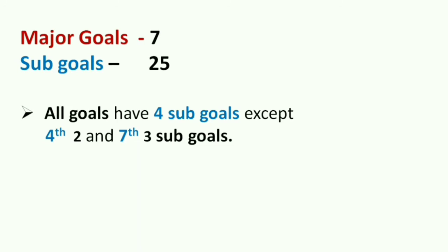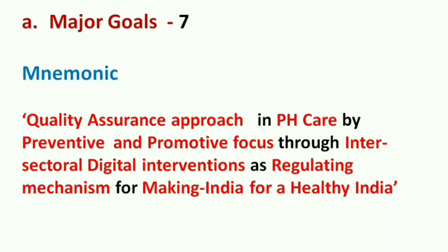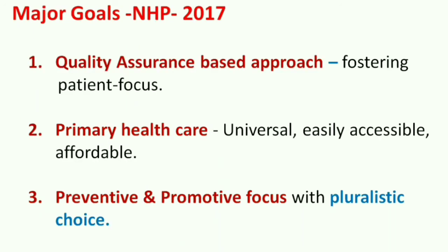Regarding major goals: there are seven goals and 25 sub-goals. All goals have four sub-goals except the fourth goal (which has two sub-goals) and the seventh goal (which has three sub-goals). The mnemonic for the major goals is: 'Quality Assurance Approach in Primary Health Care by Preventive and Promotive focus through two Intersectional Digital Interventions as Regulating Mechanism for making India a Healthy India.'